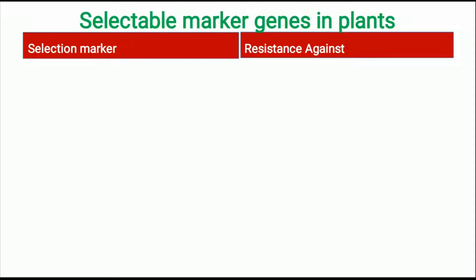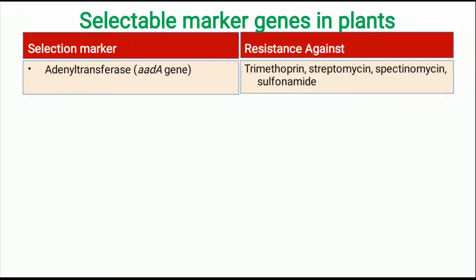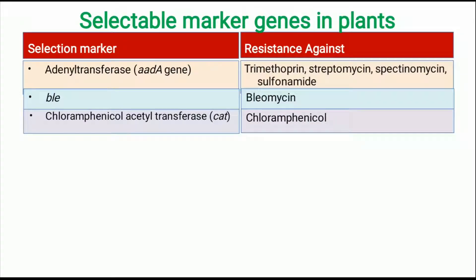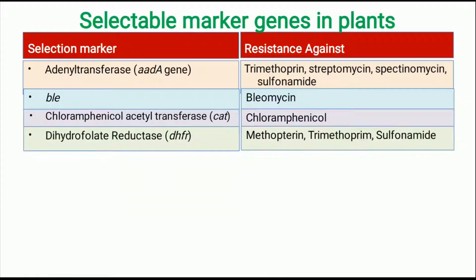Some widely used selectable markers in plant transformation include: the AAD gene or adenyl transferase, which shows resistance against trimethoprim, streptomycin, spectinomycin, and sulfonamide; the BLE gene showing resistance against bleomycin; the CAT gene or chloramphenicol acetyltransferase, which allows plants to survive in chloramphenicol selection medium; and DHFR or dihydrofolate reductase, which allows plants to survive against methotrexate, trimethoprim, and sulfonamide.